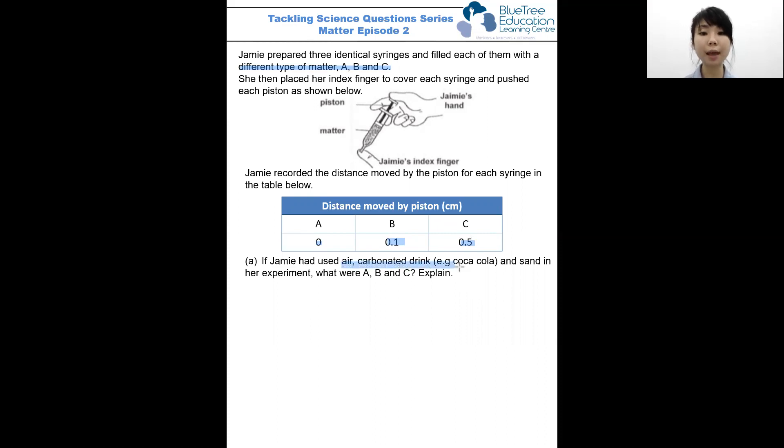The question further reveals that Jamie used air, carbonated drink and sand in the experiment, and asked us what is A, B and C respectively, and to explain how we came to that conclusion.